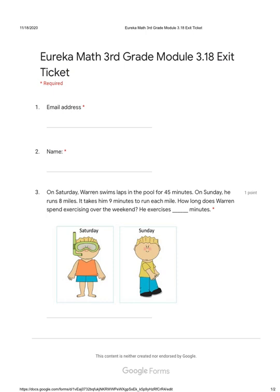We're going to start off by looking at our first problem, which is number three. On Saturday, Warren swims laps in the pool for 45 minutes. On Sunday, he runs eight miles. It takes him nine minutes to run each mile. How long does Warren spend exercising over the weekend?